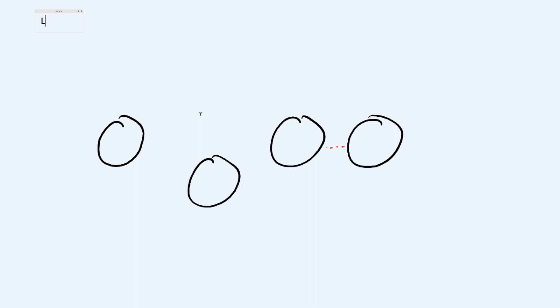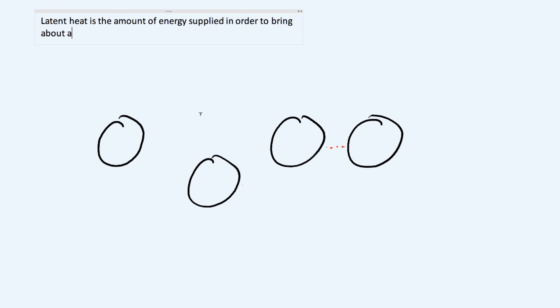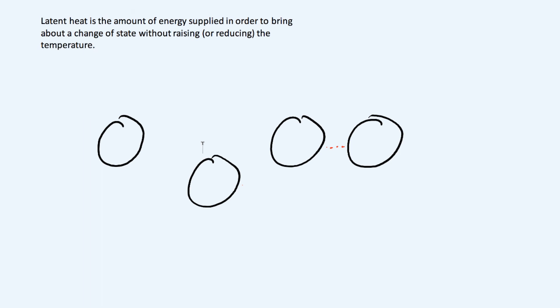That is what latent heat is. Latent heat is the amount of energy supplied in order to bring about a change of state without raising or reducing the temperature. The energy required to break those bonds and turn a solid into a liquid without the temperature changing is called the latent heat.